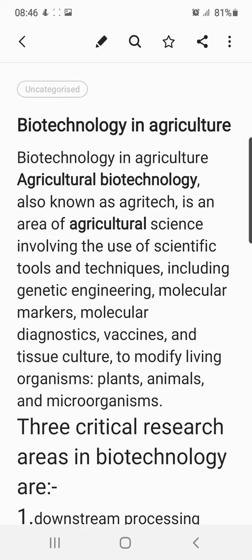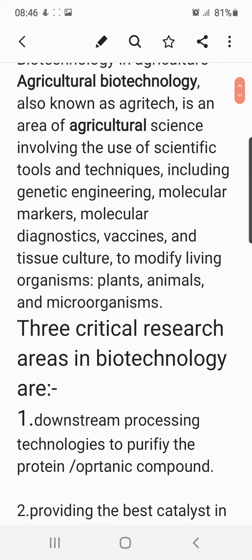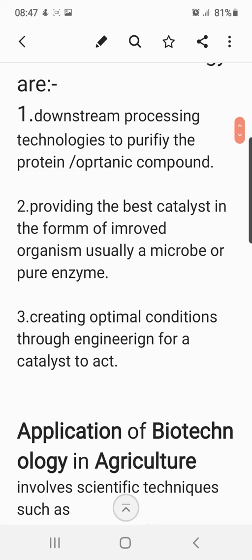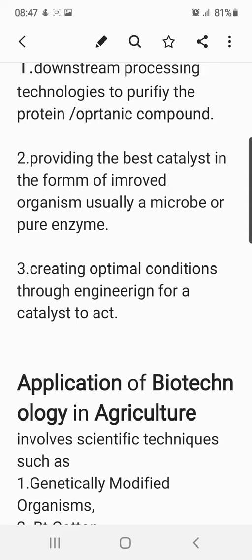Let's see what are the three critical research areas in biotechnology. The first is downstream processes or technologies to purify the protein or organic compound obtained from a substance of biotechnological significance. The second is providing the best catalyst in the form of improved organisms, usually a microbe or pure enzyme. The third is creating optimal conditions through engineering for a catalyst to act and obtain biotechnological products of significance.